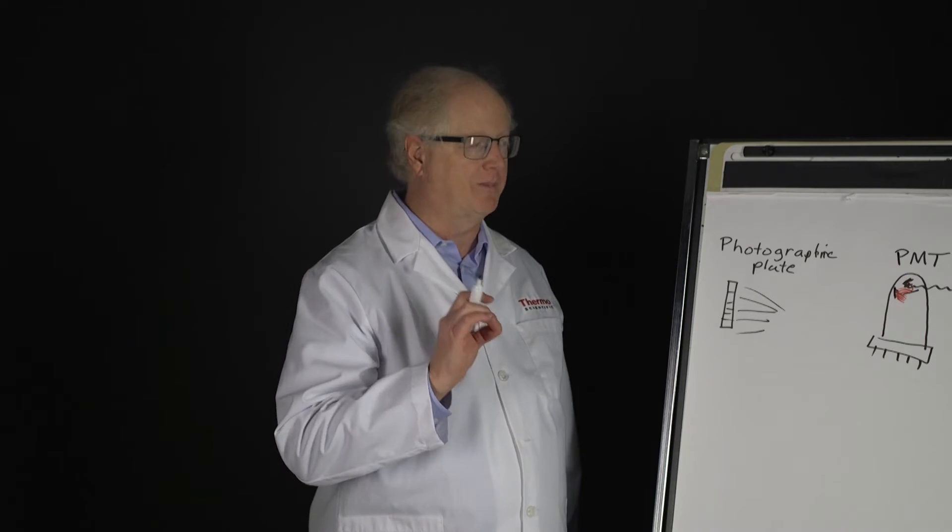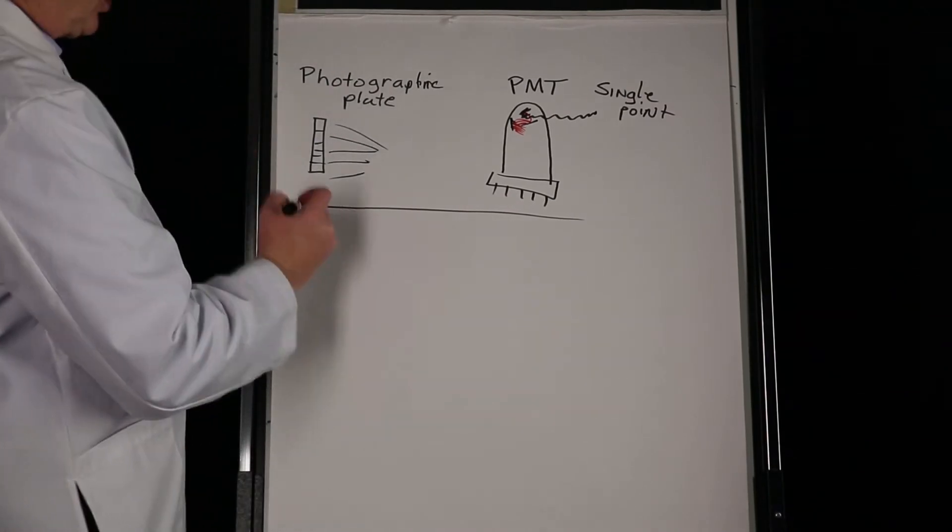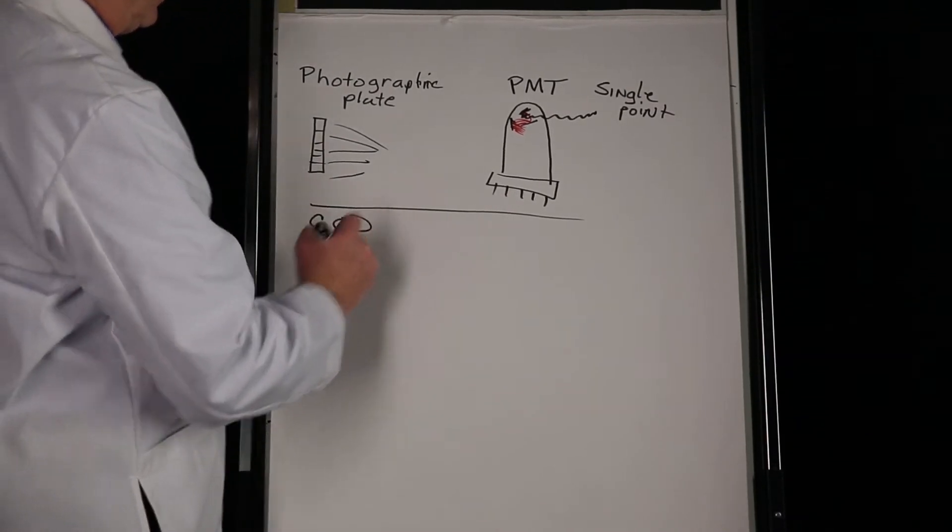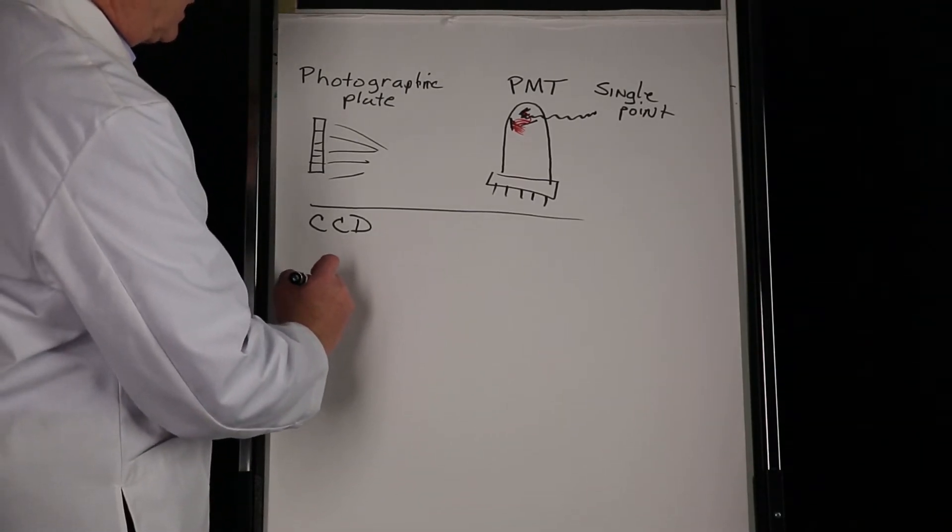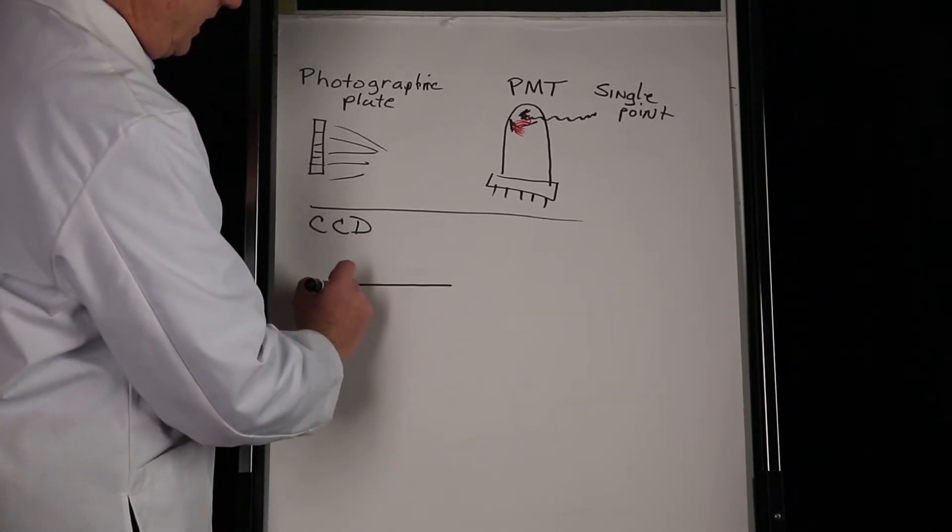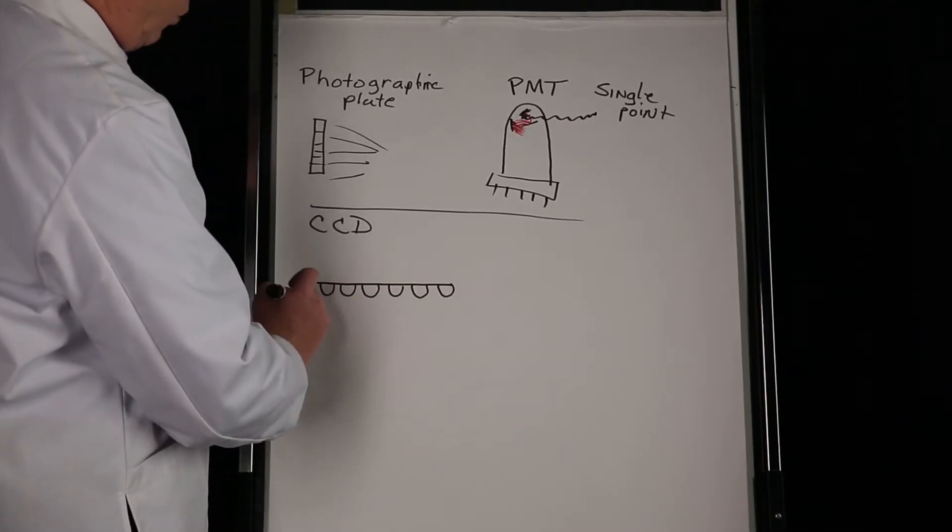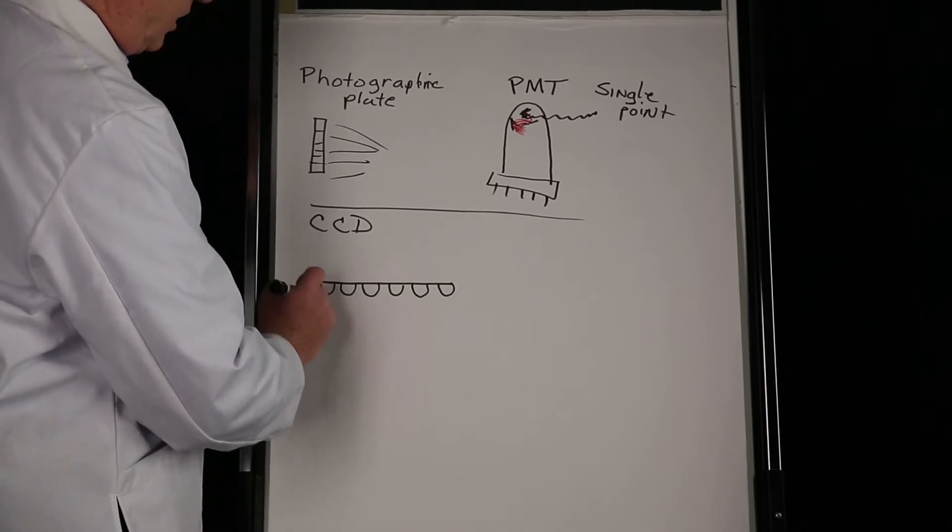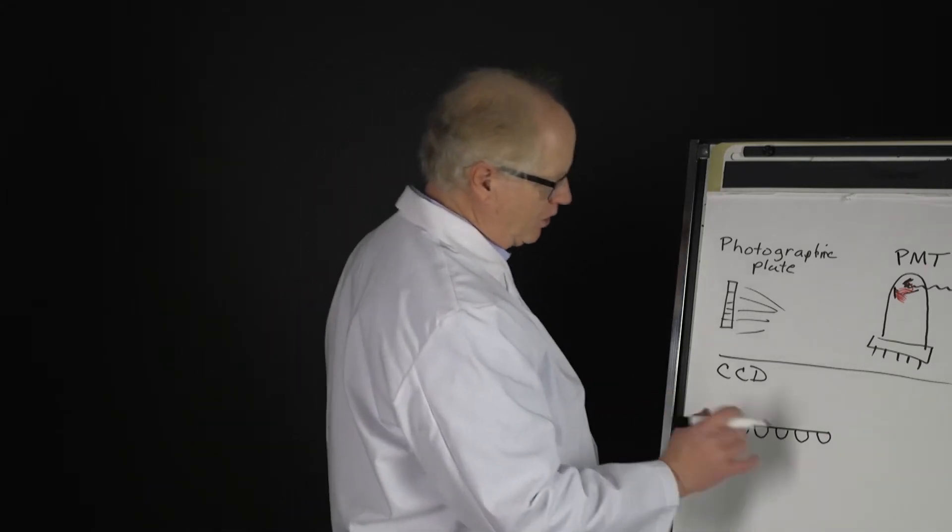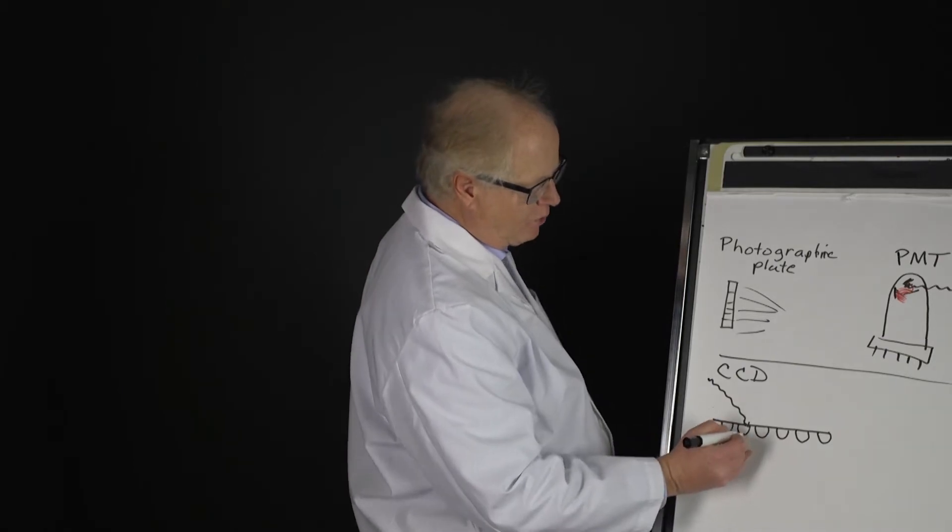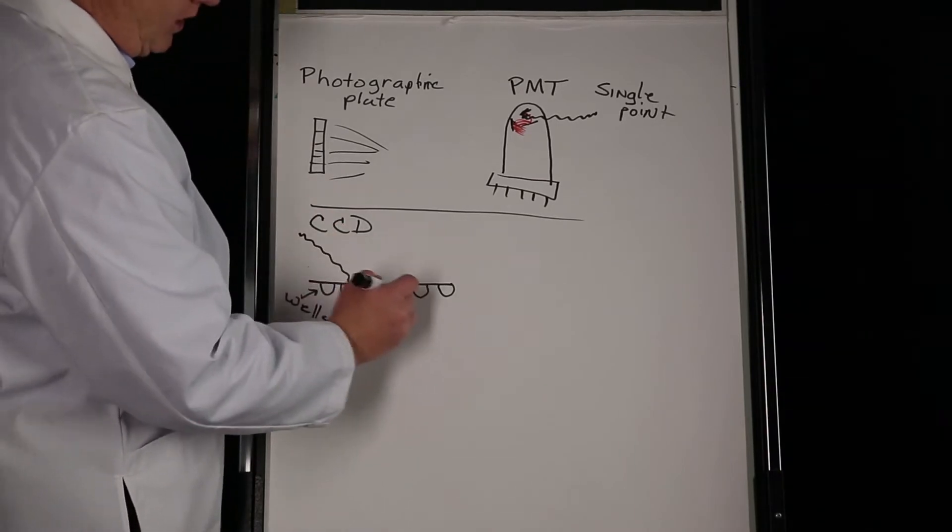All of that really changed and surged to the forefront with the charge coupled device detectors coming online. A charge coupled device detector is a solid state system consisting of a series of wells, electronic wells on the surface. We'll call them wells, and then when a photon arrives in a particular well an electron would get promoted and we would begin to fill up that well.